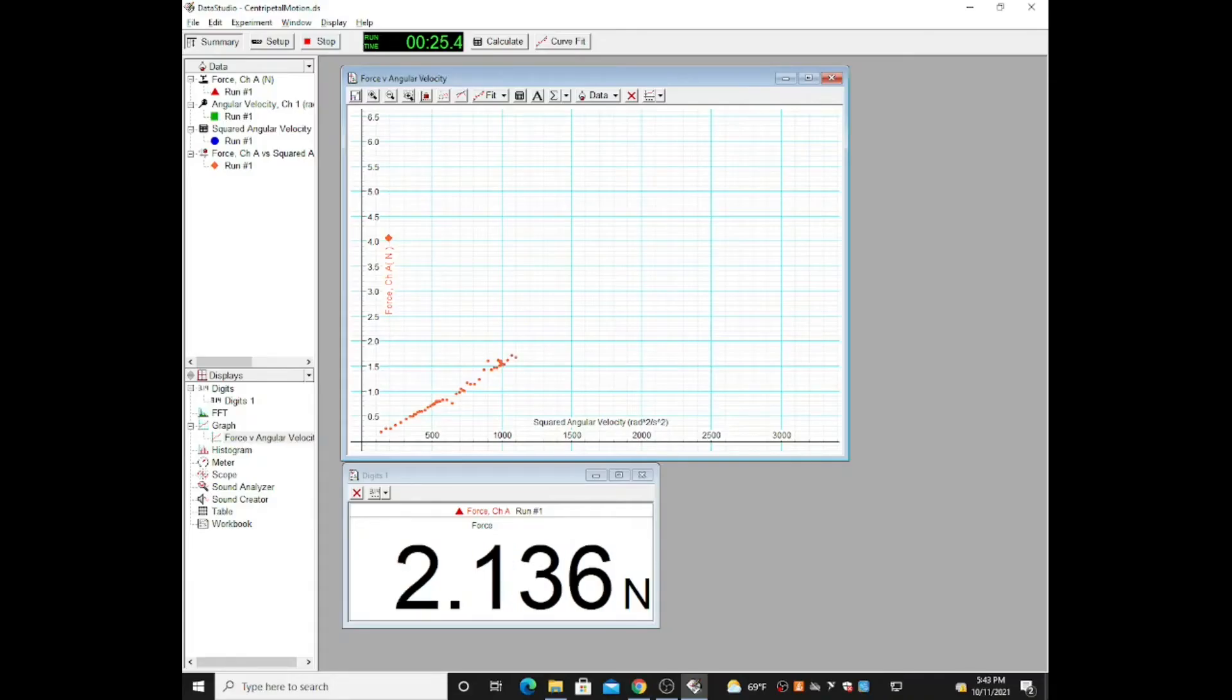This plot shows the force due to the centripetal acceleration of the spinning mass versus the square of the angular rotation rate.